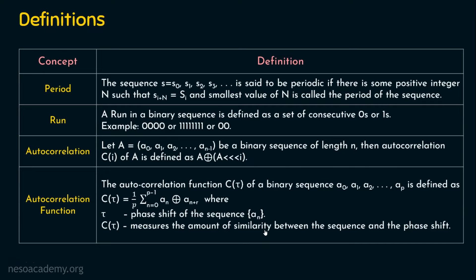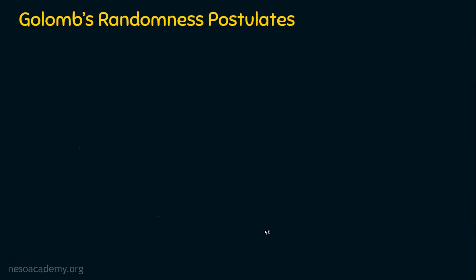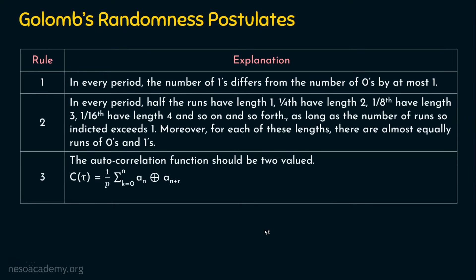This definition will also be clear when we see an example. Let's see the example for Golomb's randomness postulates. We have three rules. Rule number one: in every period, the number of 1s differs from the number of 0s by at most 1. In other words, if the period is of length 8, there should be four 0s and four 1s. If the length is 9 (an odd number), the number of 0s or 1s can differ by 1 — so there can be four or five of each.